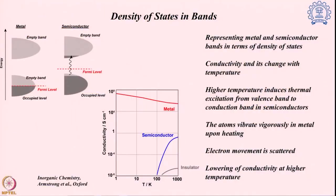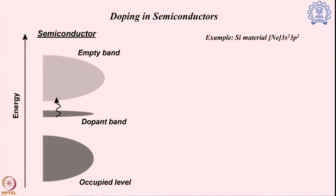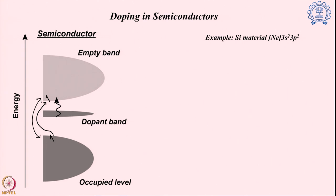The density of states representation nicely shows that semiconductors increase conductivity with temperature whereas metals decrease conductivity. Now we come to another very important aspect: doping. Semiconductors can show some conductivity but there is an energy gap between the occupied level and the empty band. If we want to cross over this band gap, we have to supply enough thermal energy. However, there is another way — we can add some impurity to create another energy band in between, which can improve electron movement in the system.